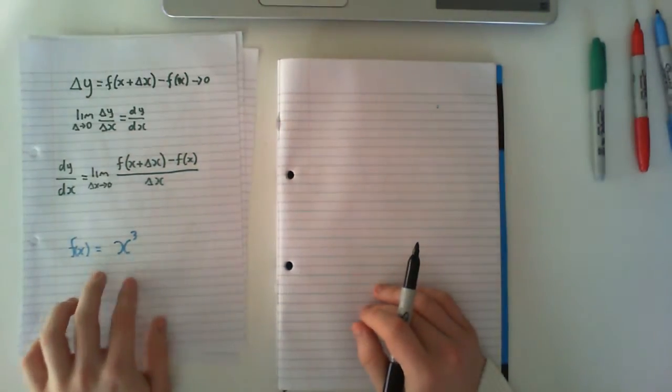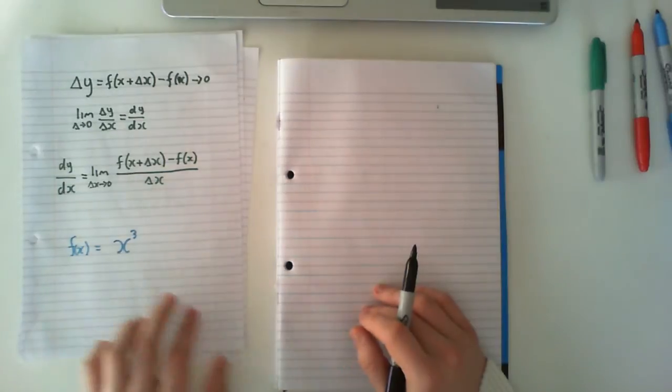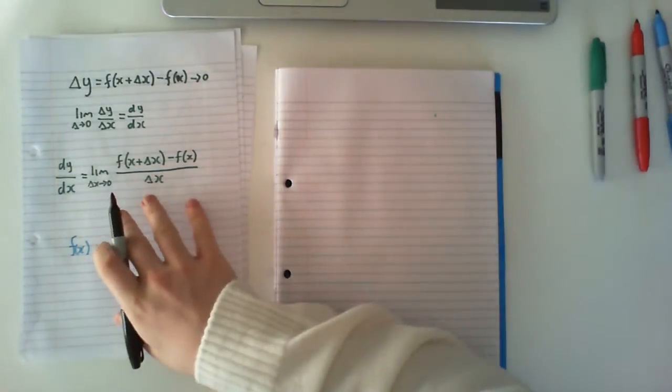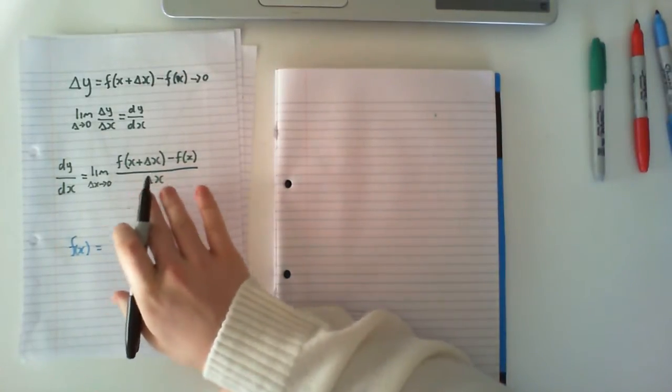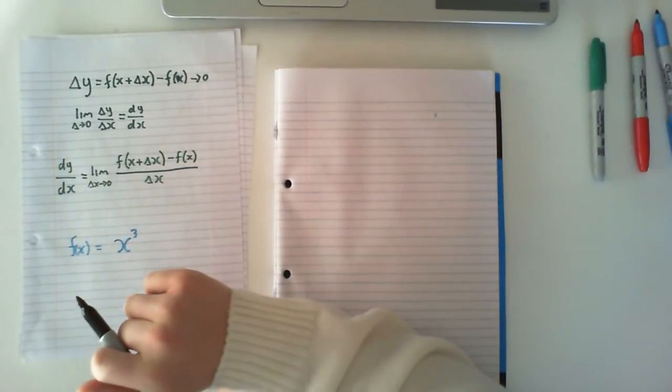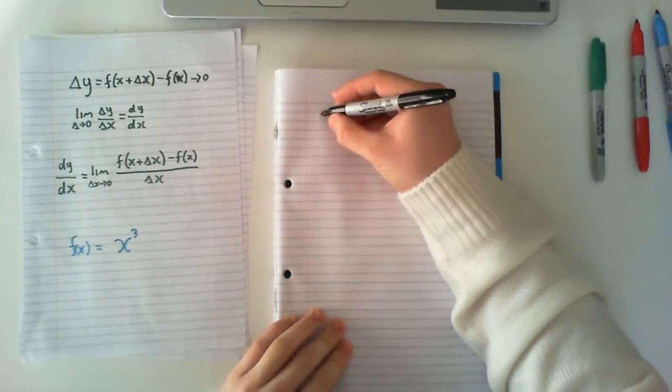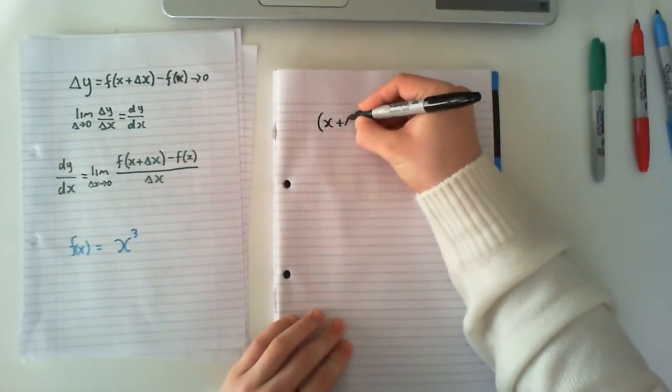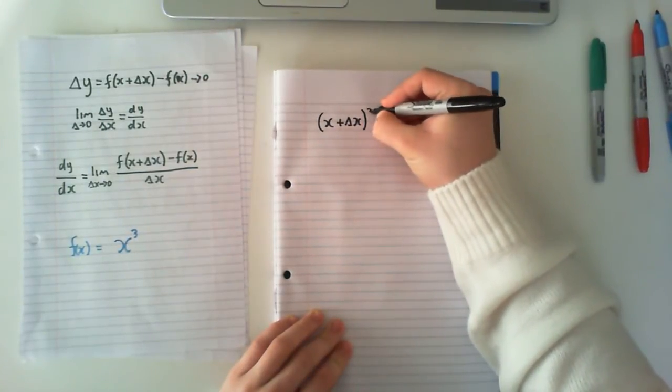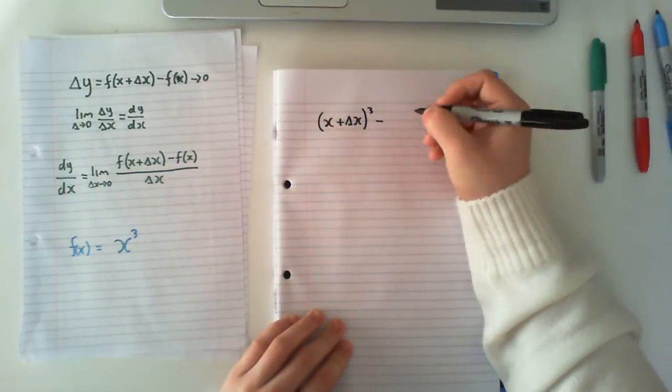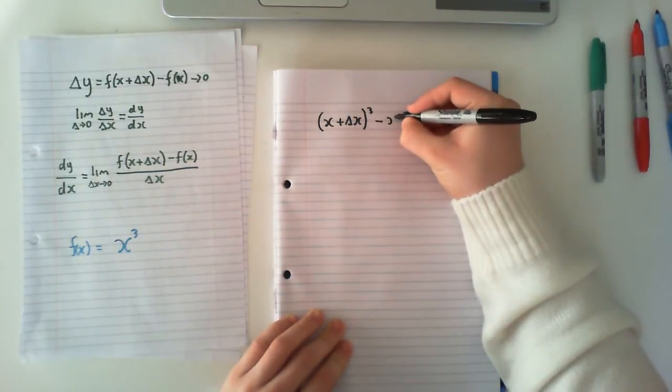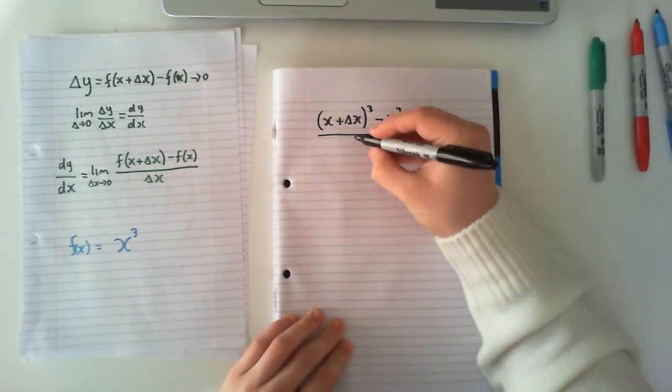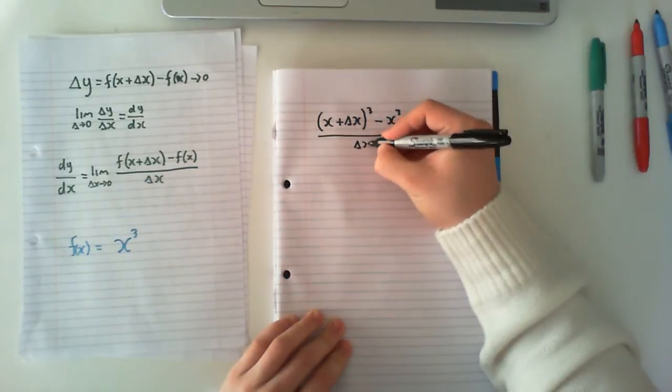So the example I'm going to use is a function f(x) is equal to x cubed. So what we do is, originally I'm not going to write the limit to zero, I'm just going to rearrange this first and then we'll take our limit to zero. So we'll just algebraically solve this first. So if we've got x cubed, we have (x plus our delta x) all cubed minus our x cubed all over delta x.